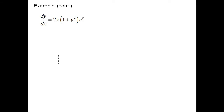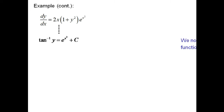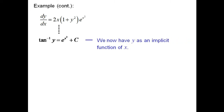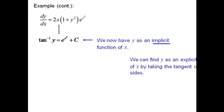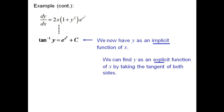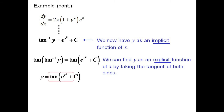Returning to dy/dx equals 2x times (1 plus y squared) times e to the power x squared, we have arctan(y) equals e to the power x squared plus c. We now have y as an implicit function of x. We can find y as an explicit function of x by taking the tangent of both sides: tan(arctan(y)) equals tan(e to the power x squared plus c). So y equals tan(e to the power x squared plus c). This is the solution of the differential equation.